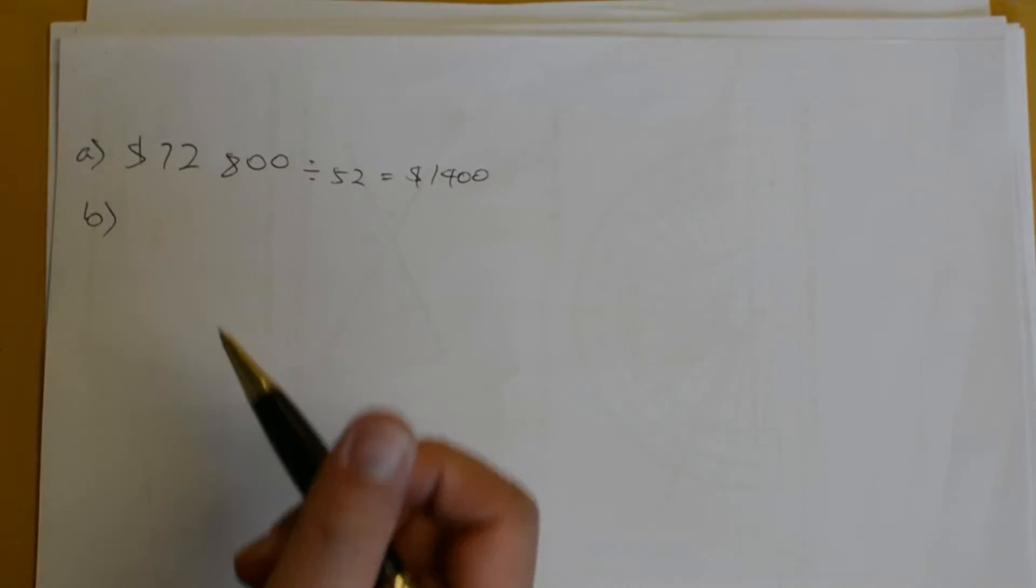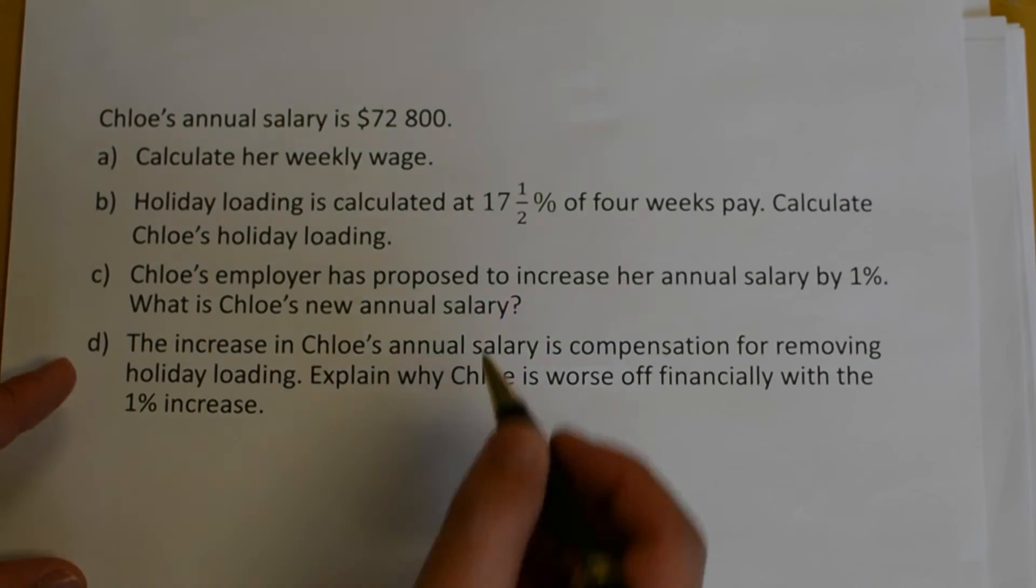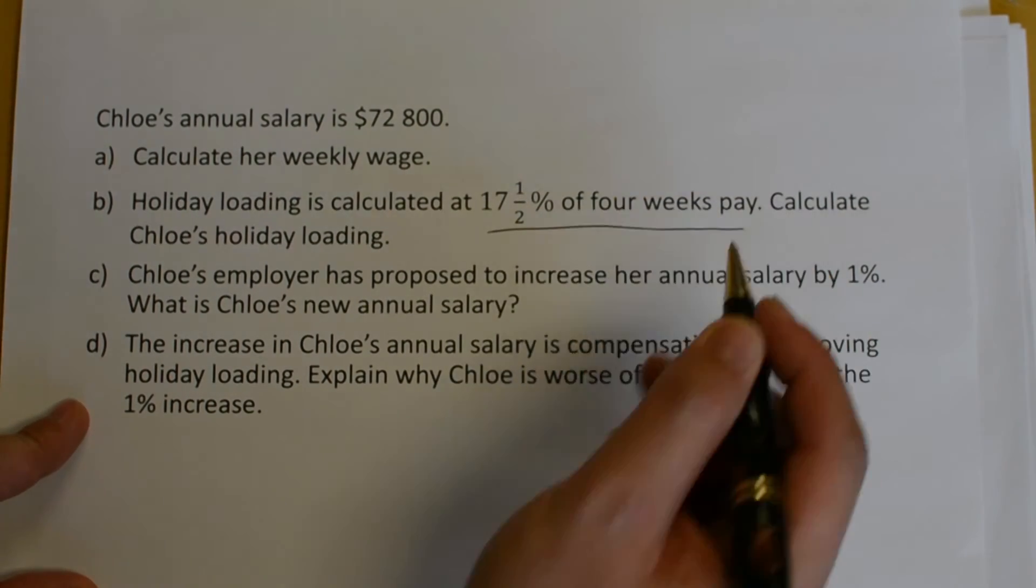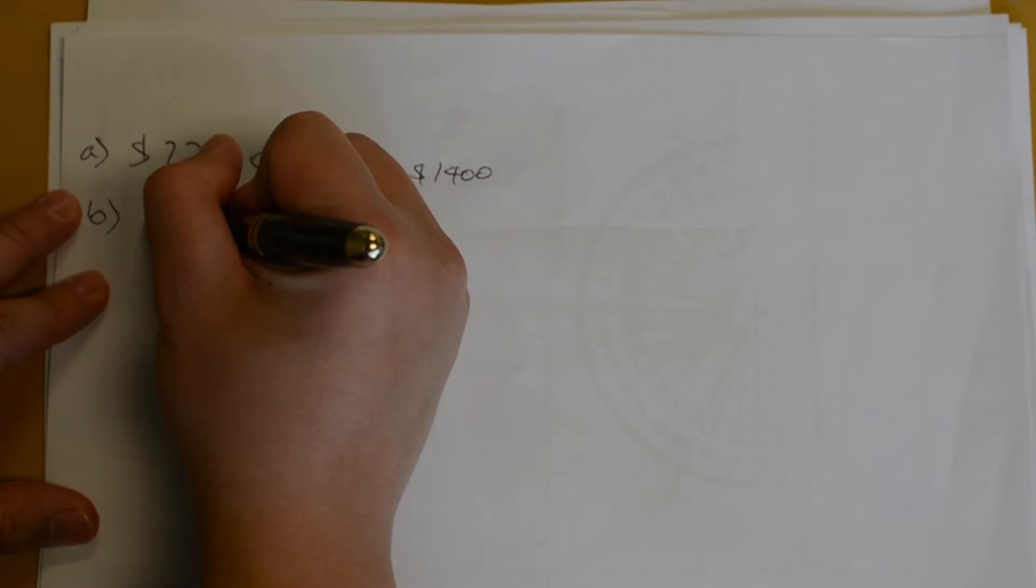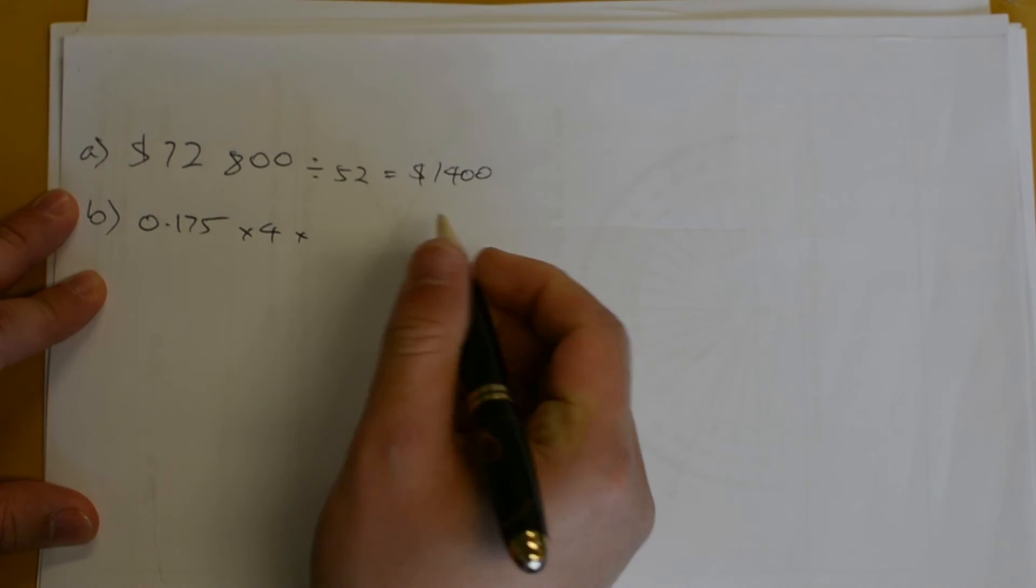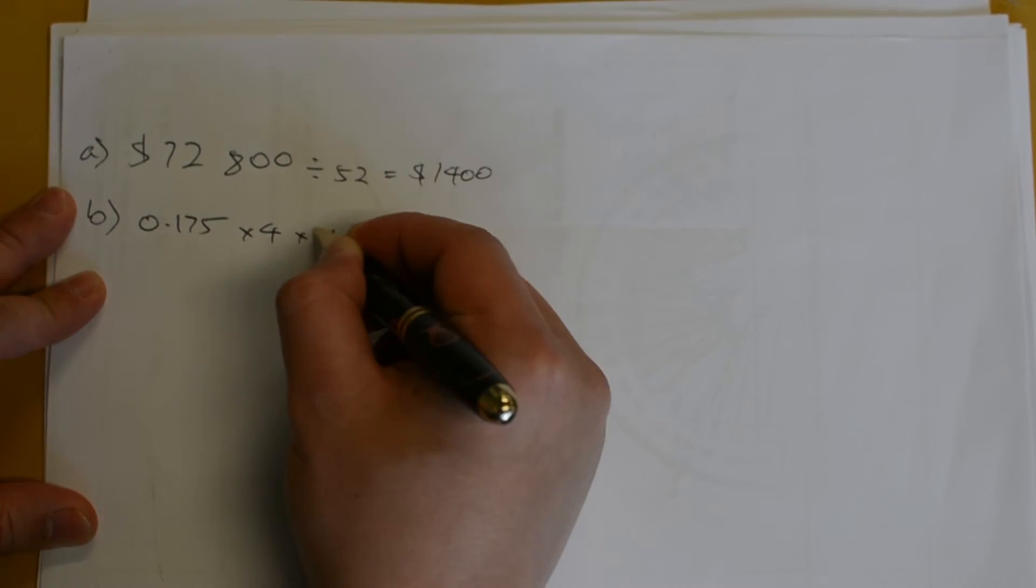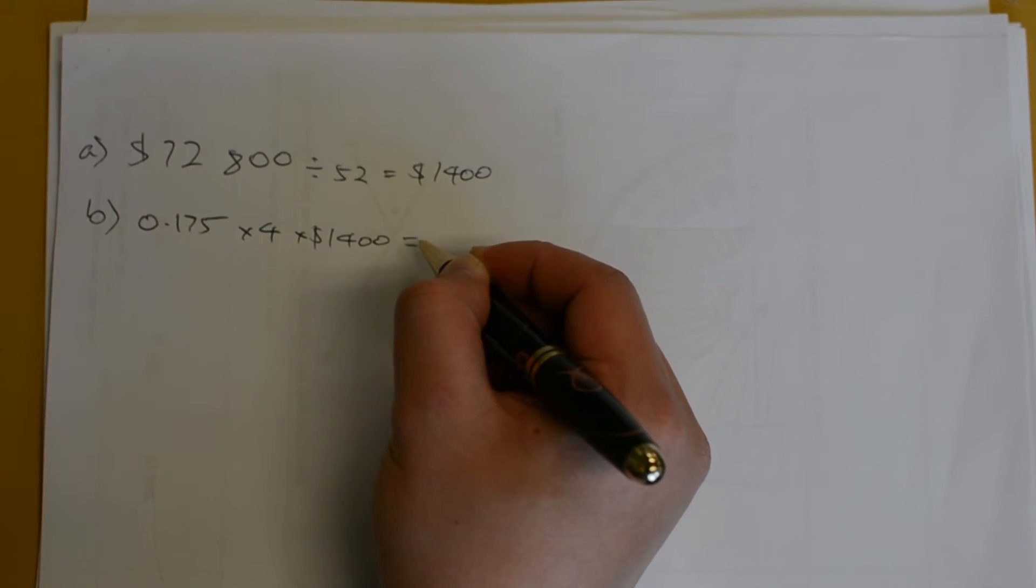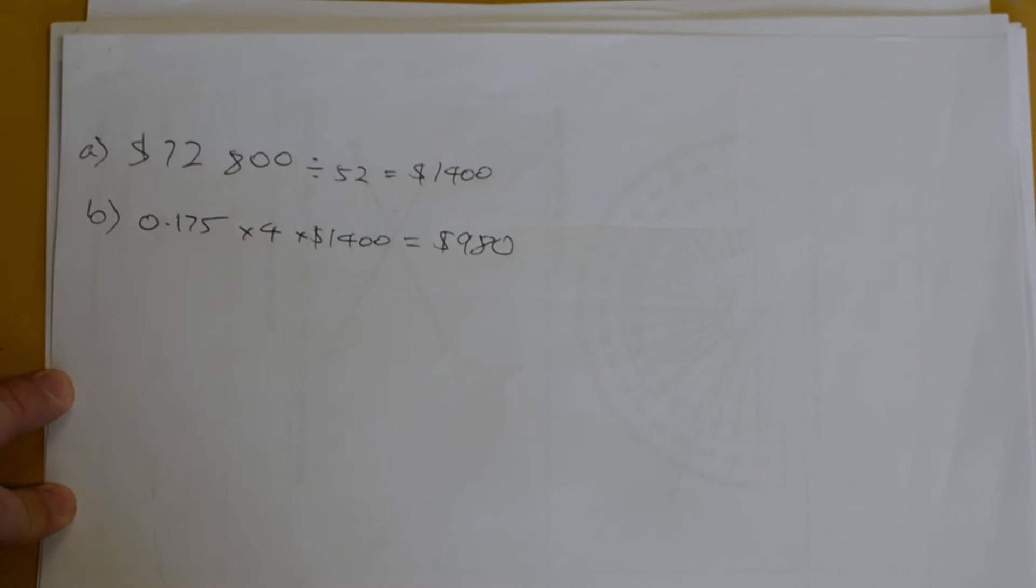For Part B, holiday loading is calculated at 17.5% of 4 weeks pay. Calculate Chloe's holiday loading. That's 17.5% of 4 weeks of her weekly pay, which is $1,400. This will come out to be $980. So over 4 weeks, she would earn $980.